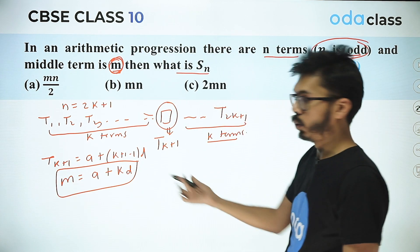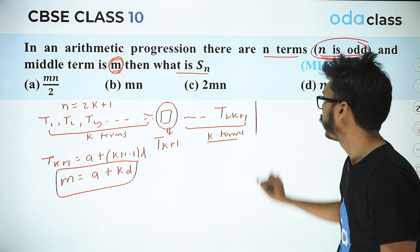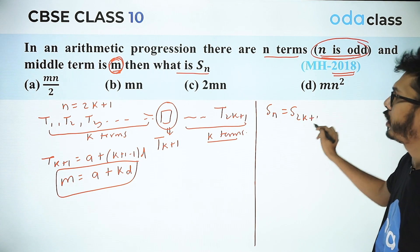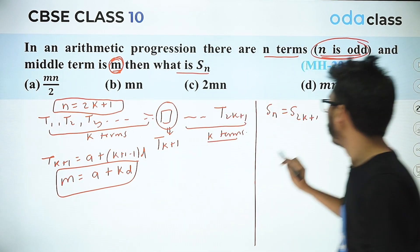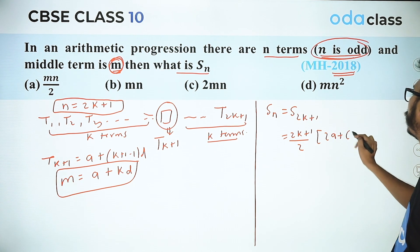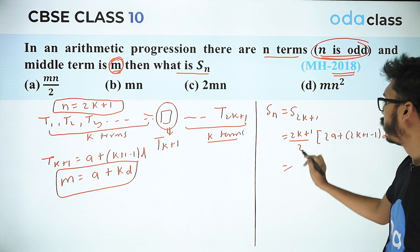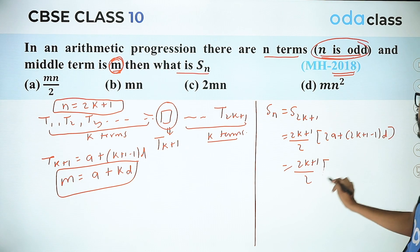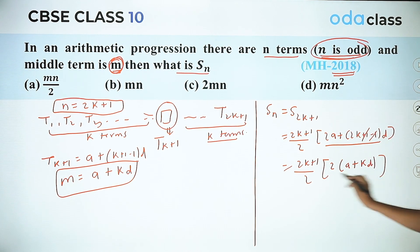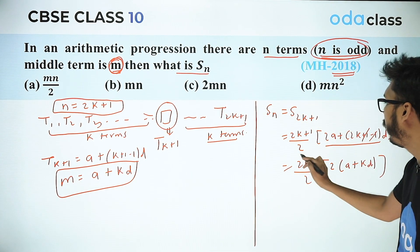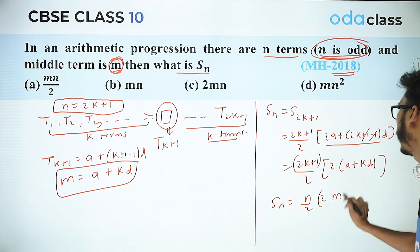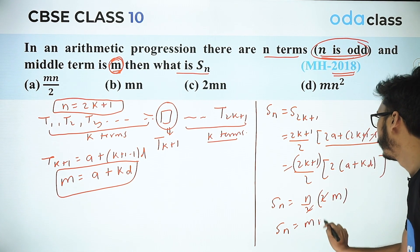Now using this to find Sn: since n = 2k+1, Sn = (2k+1)/2 × [2a + (2k+1−1)d] = (2k+1)/2 × [2a + 2kd] = (2k+1)/2 × 2(a + kd). Since a + kd = m, substituting back and replacing 2k+1 with n gives Sn = n/2 × 2m, so Sn = mn.